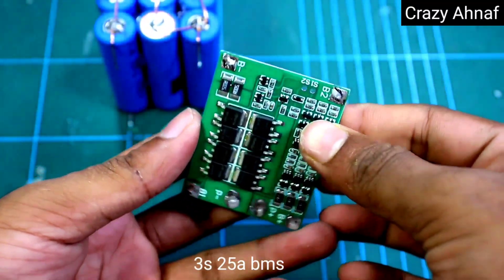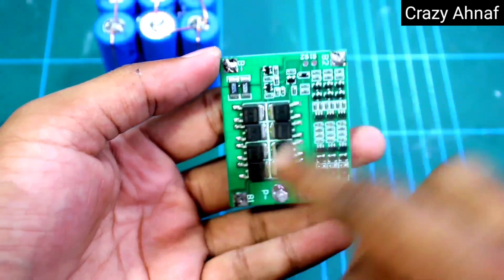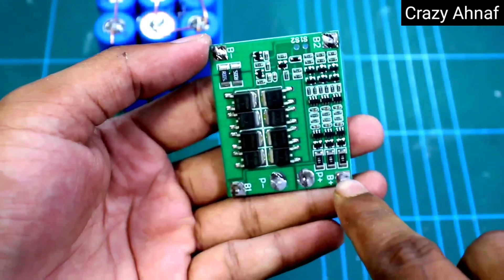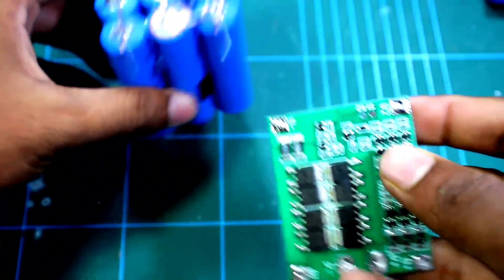I will use a 3S BMS here to protect the batteries. This BMS supports up to 25 amperes. I will give the BMS connection in the video if you want you can do the work very easily.